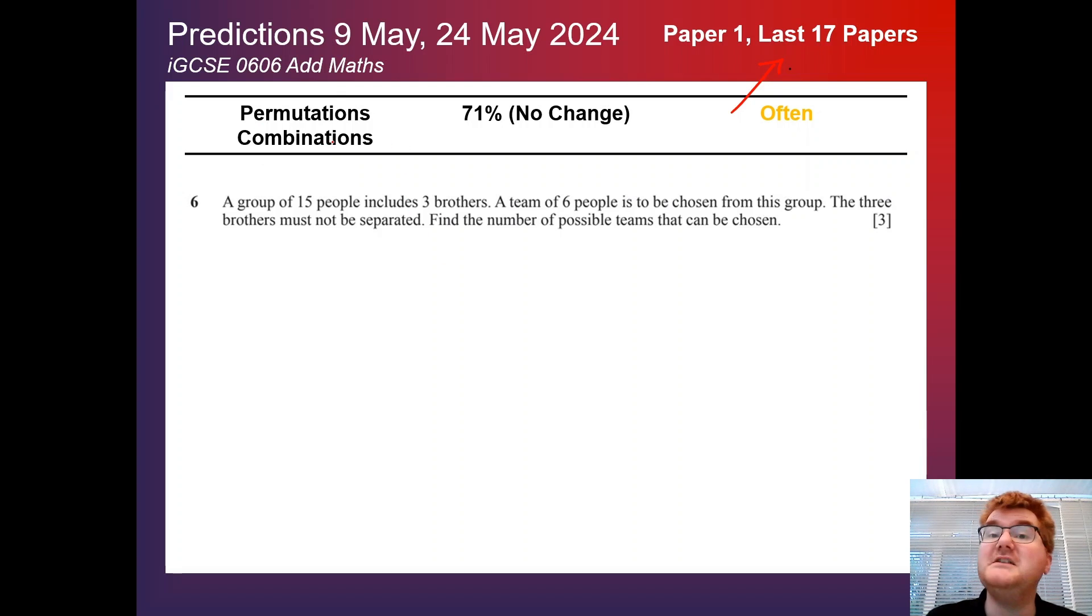First of all, we have permutations and combinations, no change at 71%, so still a very often topic on Paper 1. Here's a nice sample question for you to have a go at at home.